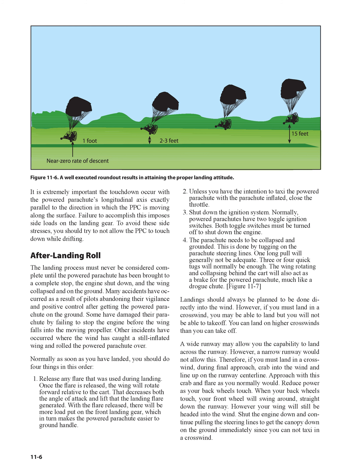2. Unless you have the intention to taxi the powered parachute with the parachute inflated, close the throttle. 3. Shut down the ignition system. Normally, powered parachutes have two toggle ignition switches — both must be turned off to shut down the engine. 4. The parachute needs to be collapsed and grounded. This is done by tugging on the parachute steering lines. One long pull will generally not be adequate; three or four quick tugs will normally be enough. The wing rotating and collapsing behind the cart will also act as a brake for the powered parachute, much like a drogue chute.